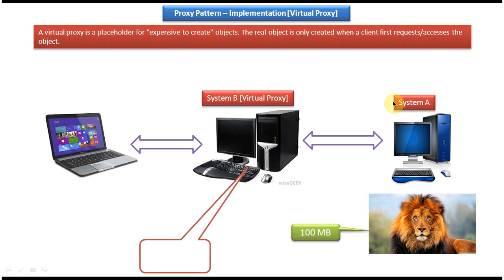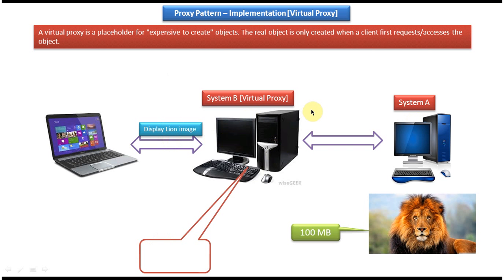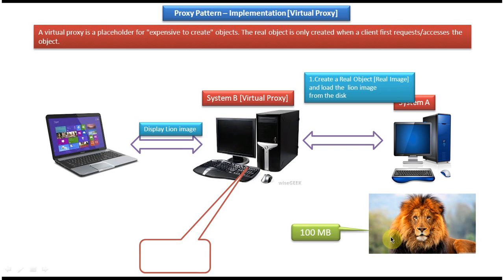On the right side you can see System A, which has a line image object that is 100 MB. On the left side you can see the client, and in between System A and the client we have System B which acts as a virtual proxy. Suppose the client sends a display line image request to System B. The virtual proxy first checks if the real image object is there — it is not. So the virtual proxy creates the real image object and loads the line image from the disk, then calls the display line image method on the real image object.